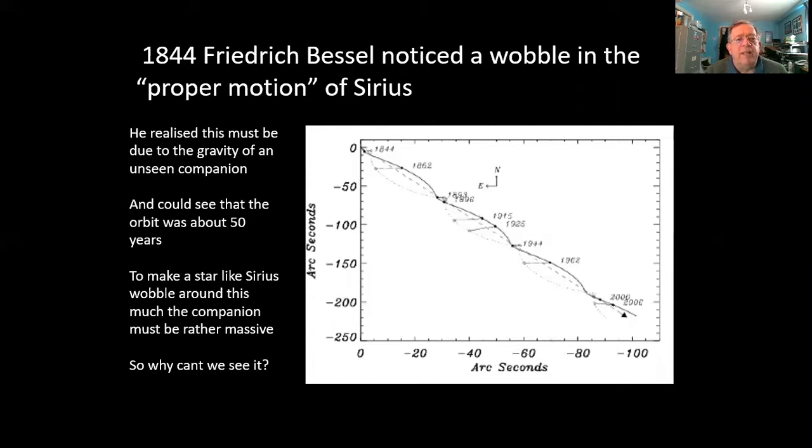A hundred or so years later, Friedrich Bessel looked at the motion of Sirius, this proper motion across the sky compared to the background stars, and plotted it on this chart, showing that it was wobbling backwards and forwards. He realized that this must be because it had a companion that was orbiting around it. In fact, a large companion so massive that they were orbiting their common center of mass. He could figure out from the length of the wobbles that the period was 50 years.